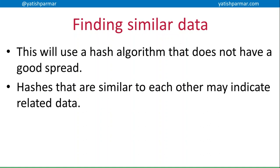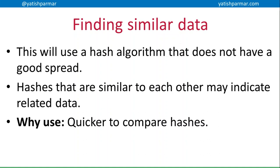Something related, but not using one of the quality indicators, is finding similar data when you're looking for some kind of trend or relationship. Here you're using hash algorithms that don't have a good spread, because hashes that are similar to each other may indicate that you've got related data. But why are we using it? Once again, it's quicker to compare hashes than to do bitwise, bit-pattern comparisons on a bit-by-bit basis for every bit in a stream of data.